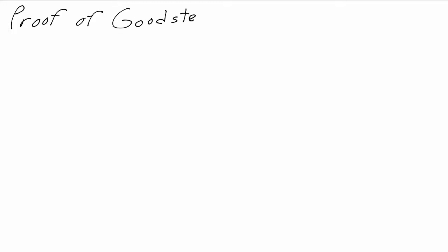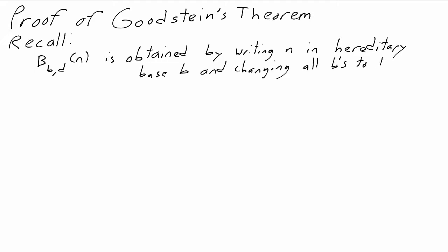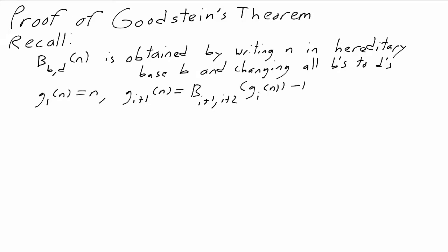It's finally time to use these ordinals to prove Goodstein's theorem. Let's recall our notation. b_bd is the hereditary base change function. b_bd of n is what happens if we write n in hereditary base b and then change every b to a d. The Goodstein sequence starting with n is a sequence of values g_i(n), where g_1(n) is always n. If g_i(n) is 0, then the sequence terminates at i. And as long as g_i(n) is greater than 0, g_{i+1}(n) is the value b_{i+1, i+2} of g_i(n) minus 1.